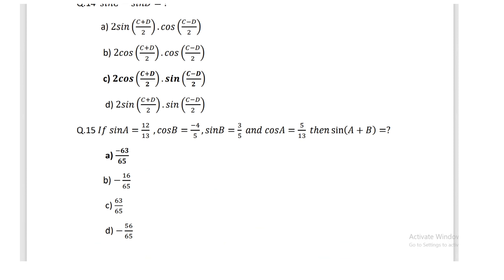The formula: sin C − sin D = 2 cos((C + D)/2) · sin((C − D)/2). Given sin A = 12/13, cos B = −4/5, sin B = 3/5, cos A = 5/13, find sin(A + B); the answer is −63/65.